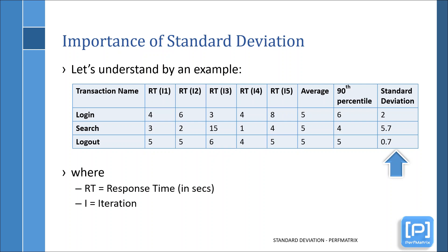Now check the standard deviation column. The logout transaction has the lowest standard deviation, that is 0.7. It shows the response time of the logout transaction has less deviation than the other two transactions. On the other hand, login and search transactions have standard deviation values of 2 and 5.7 respectively. Hence, logout transaction is more consistent than the other two. If you look at the response time values of logout transactions — which are 5, 5, 6, 4, and 5 — you can see that the deviation is very less.